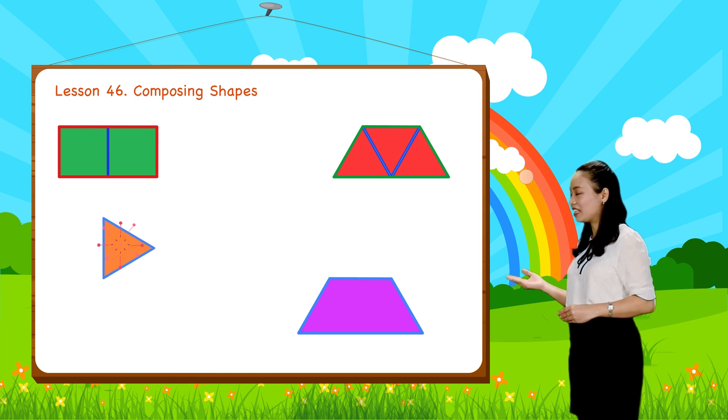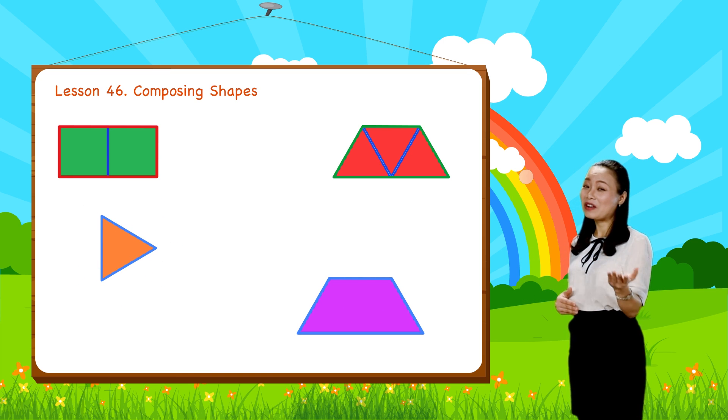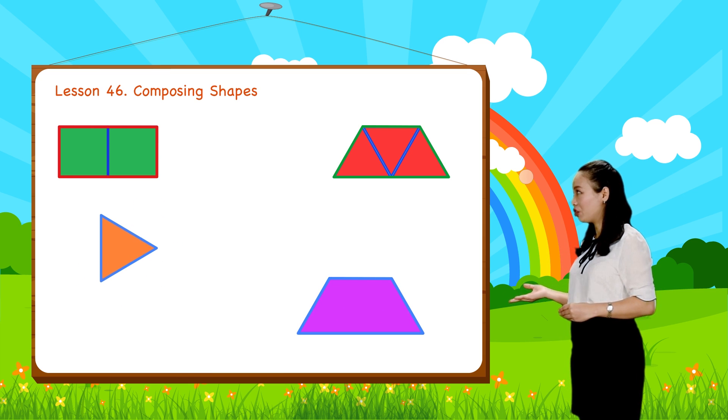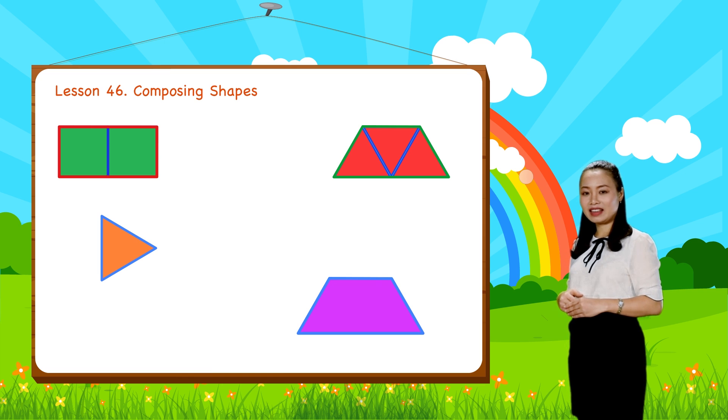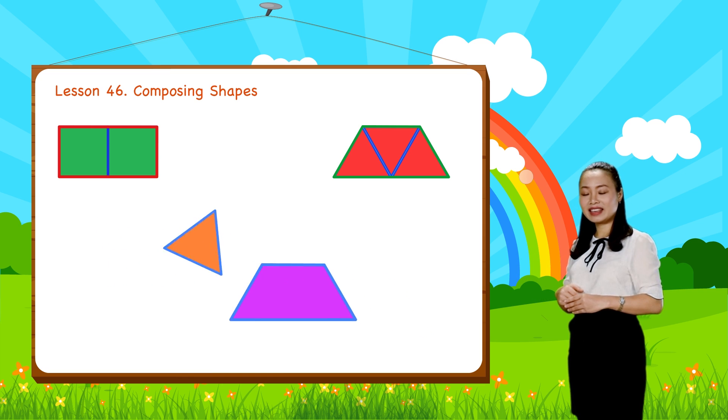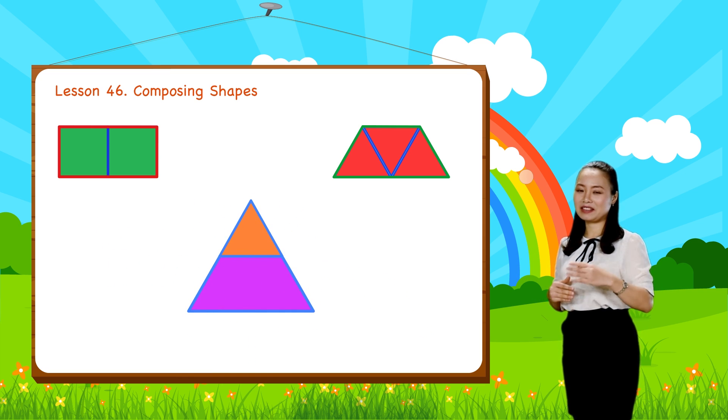Look, we can put a triangle and a trapezoid together to make a bigger triangle.